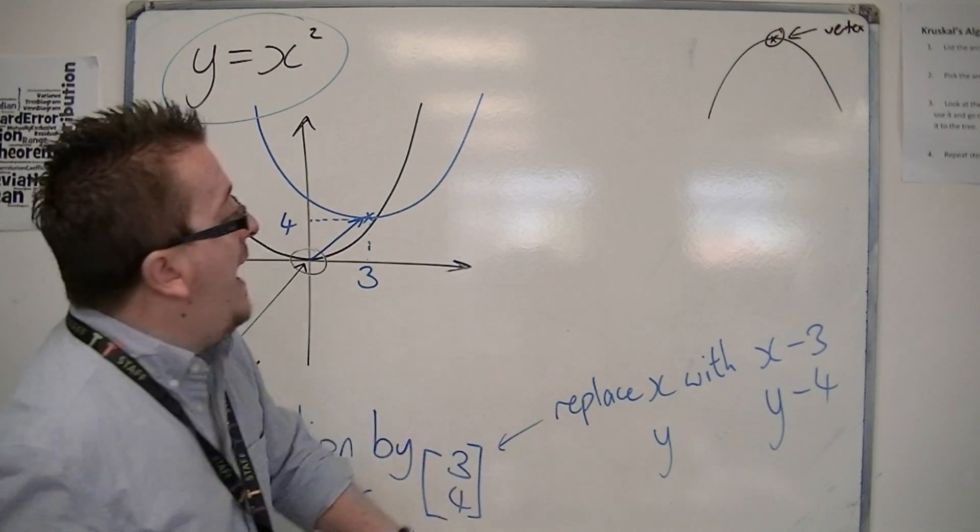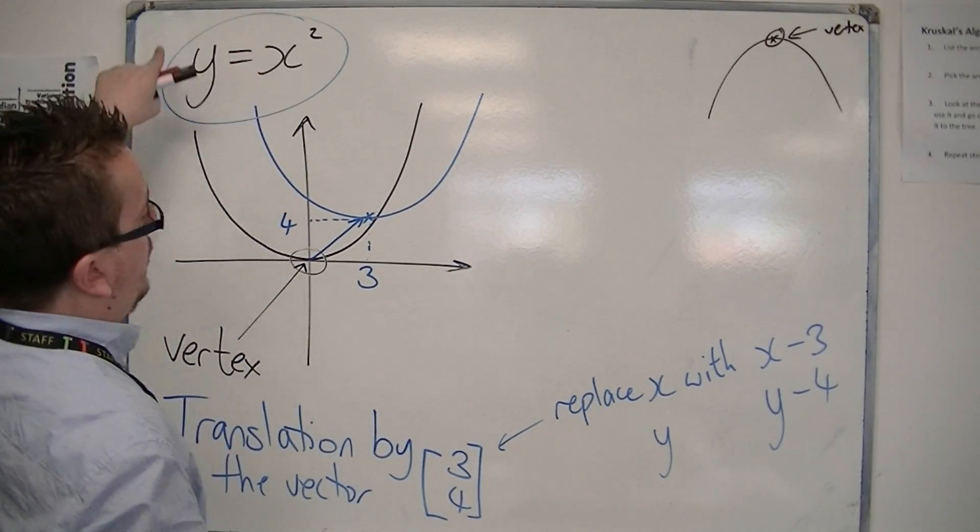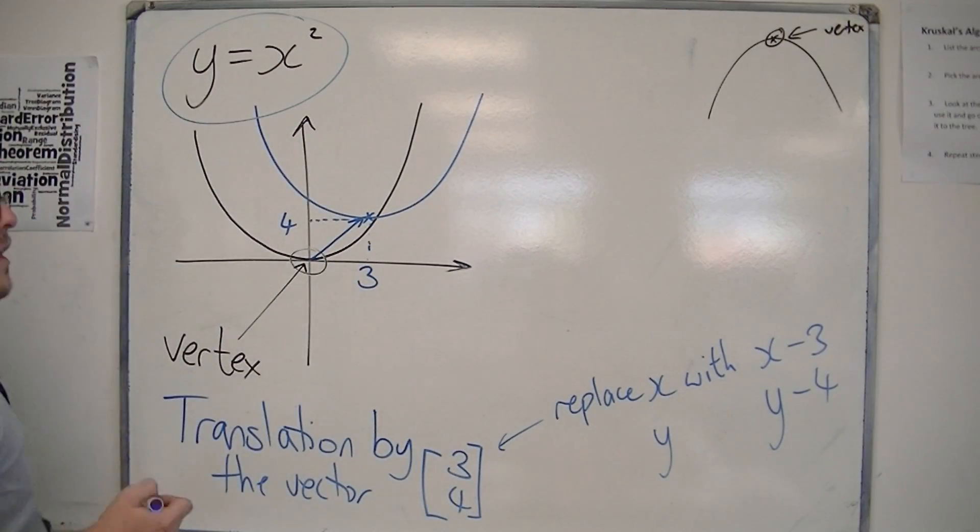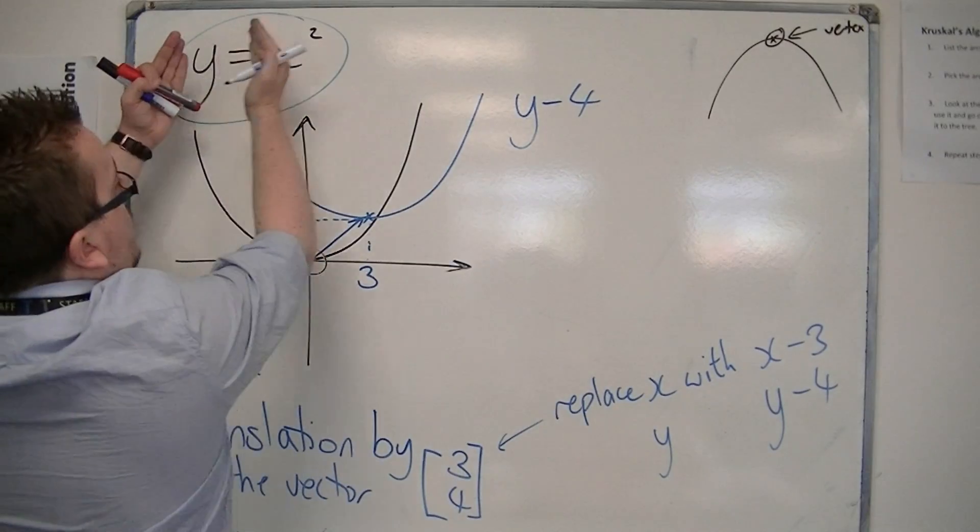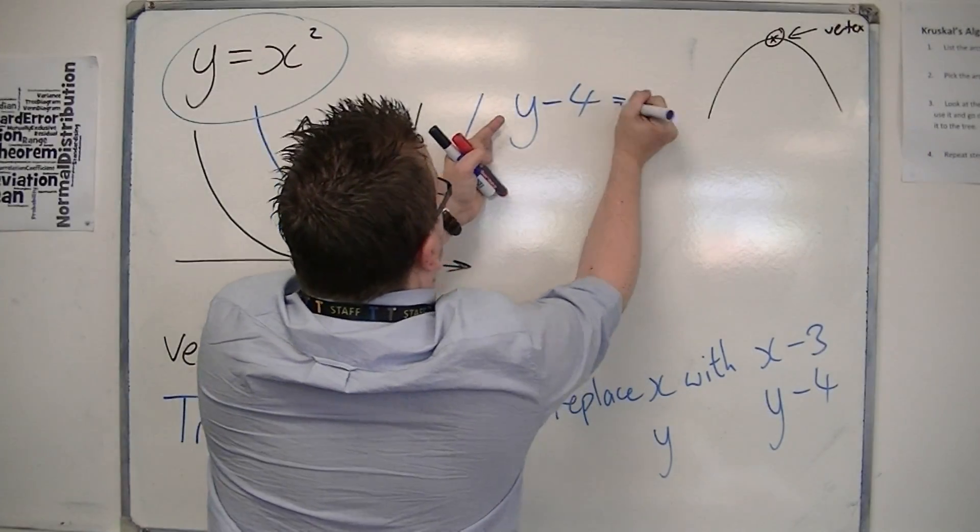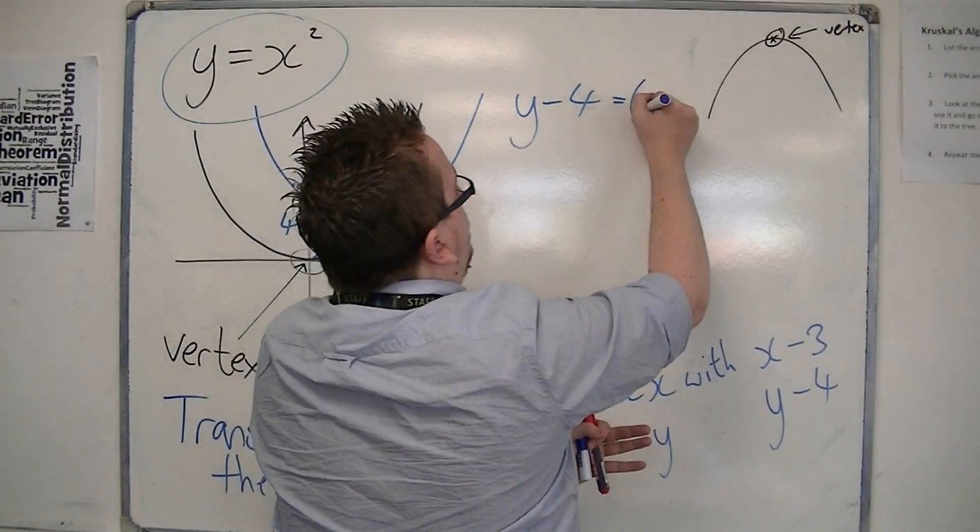So we're going to replace the x in this equation with x minus 3 and replace the y with y minus 4. So we get y minus 4. I've replaced the y with y minus 4 and the x is now replaced with x minus 3.